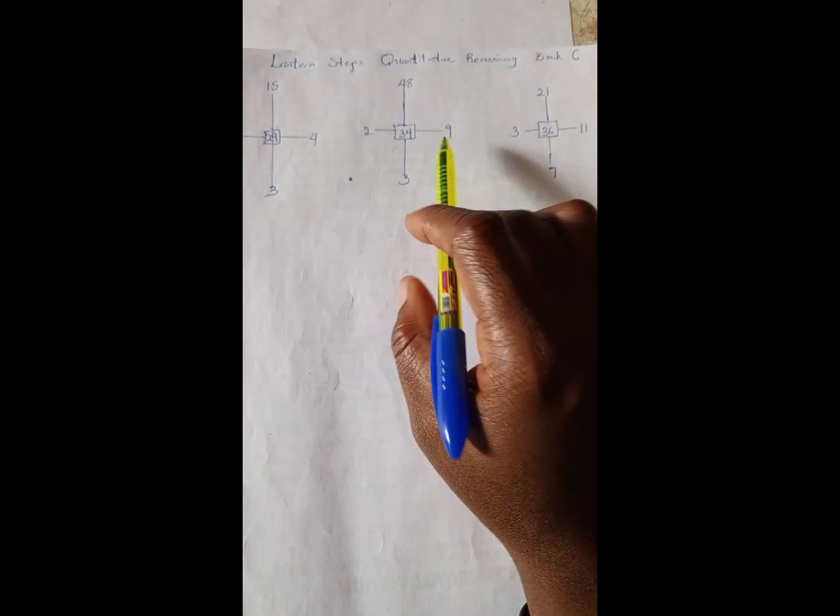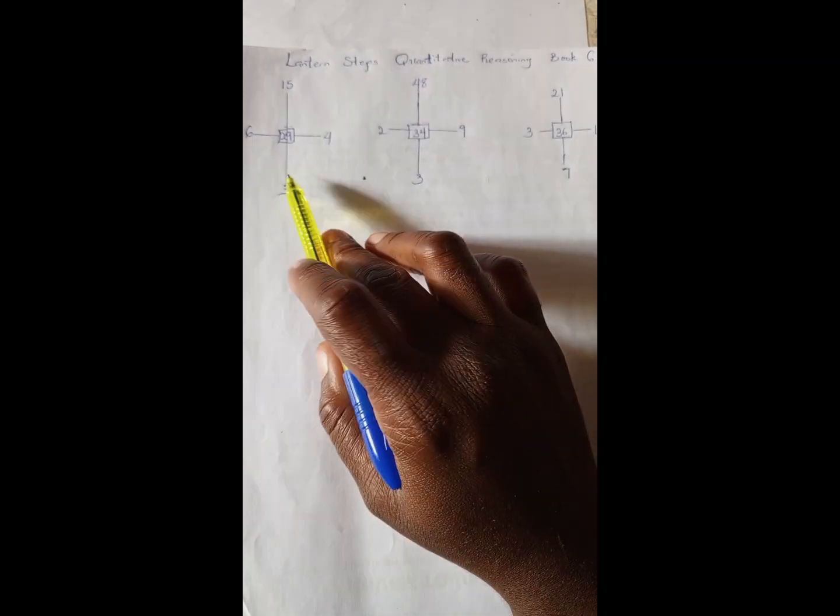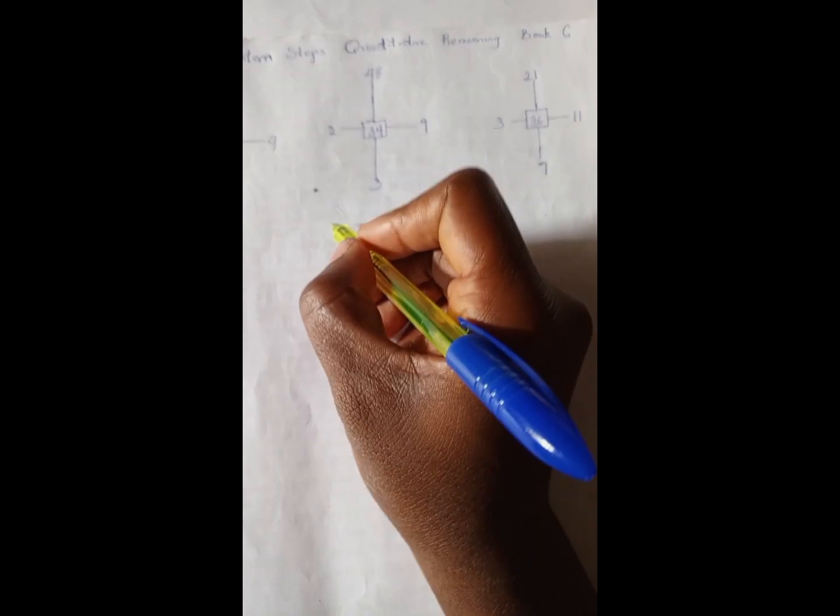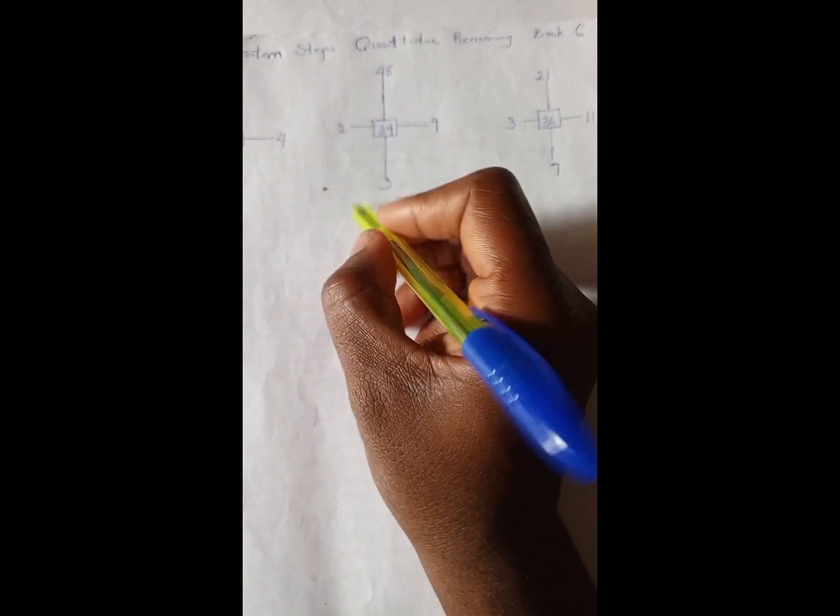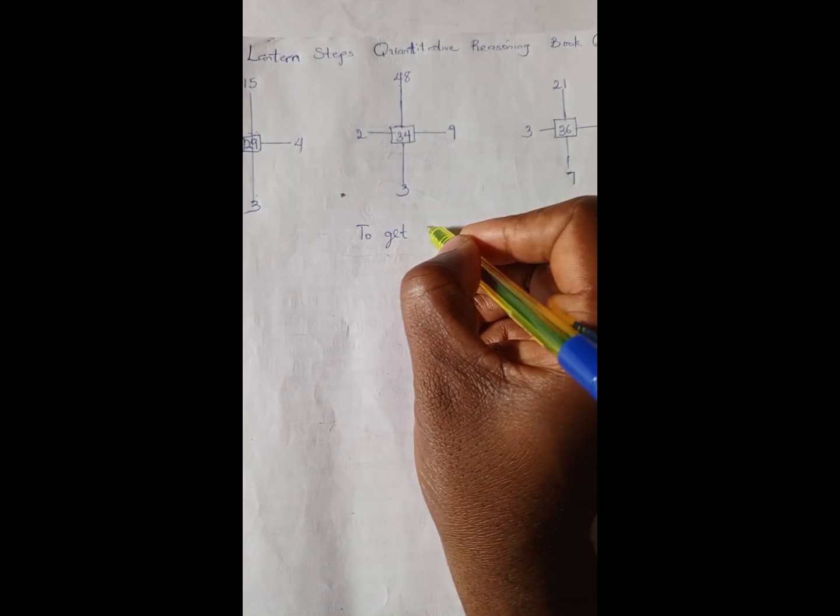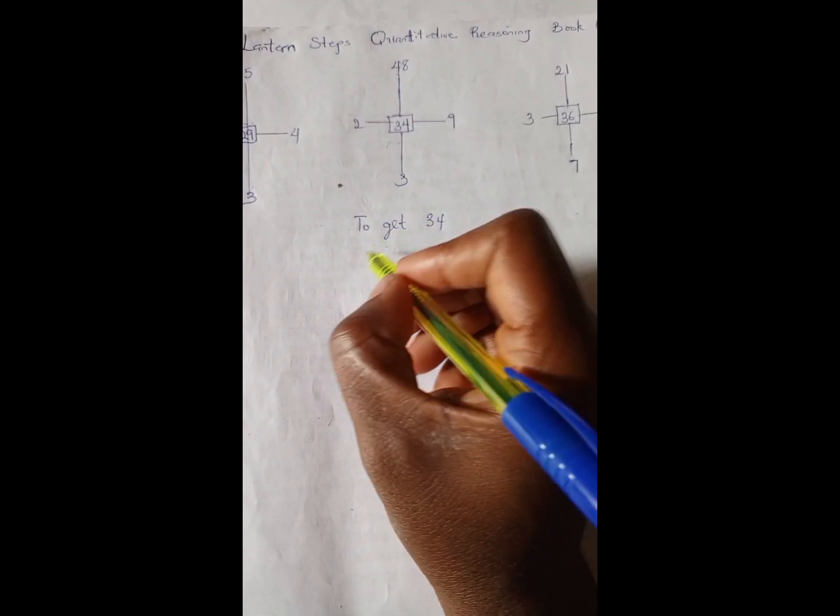So we're going to solve this, and it's expected that whatever works for the first example will work for the second and the third, right? So let's solve example two. So to get 34, which is the middle number, we...